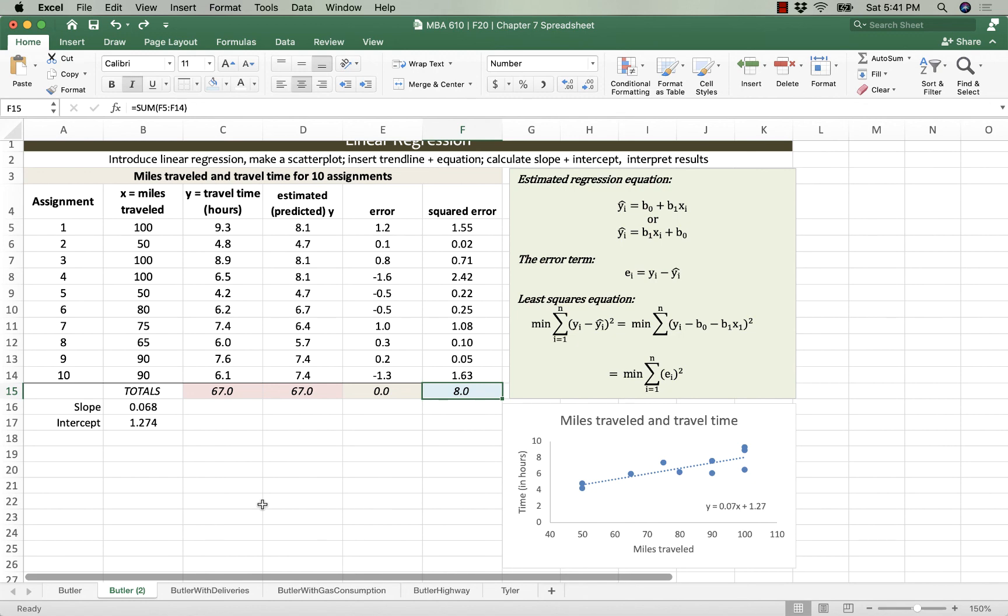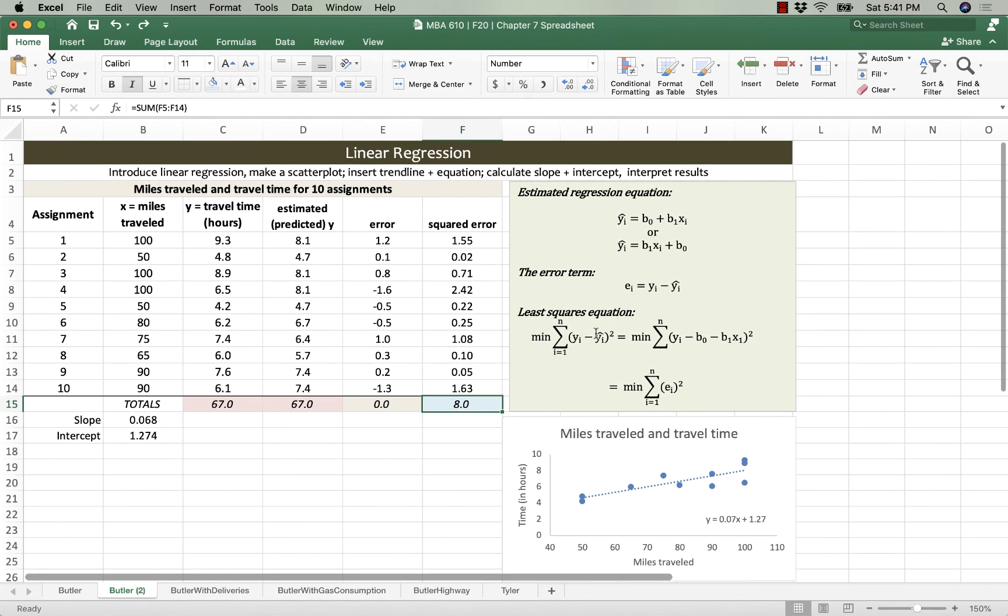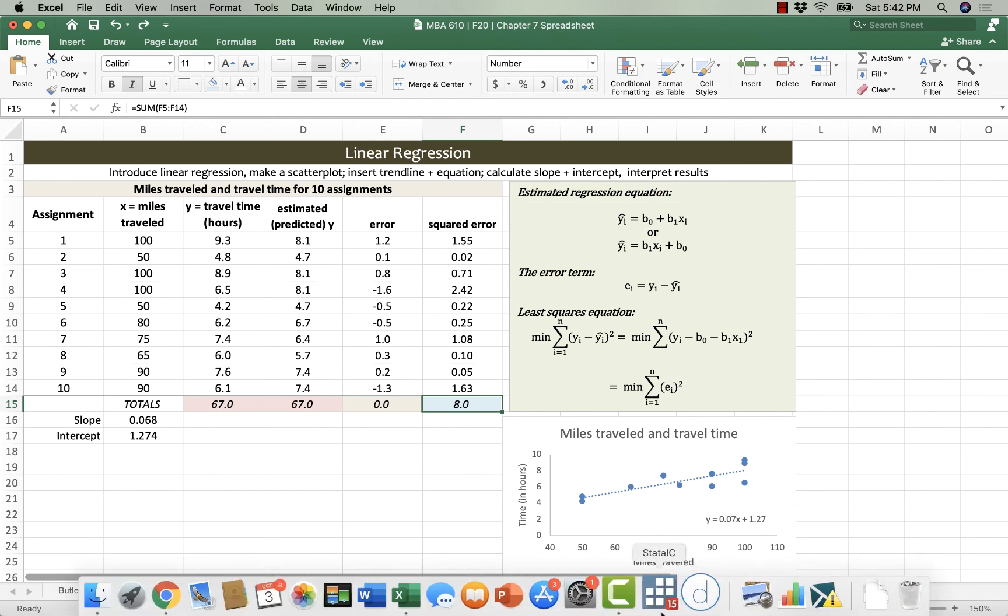I'm hoping that you feel pretty good about what the error term is and how ordinary least squares plots that line such as to minimize the sum of the squared errors. Also, I hope that when you look at this chart, you can see what I mean by a residual, which is the difference between an actual observed value of y and what we would have predicted it to be. All right, those are the take-homes. If you have any questions, feel free to send me an email. Happy calculating.